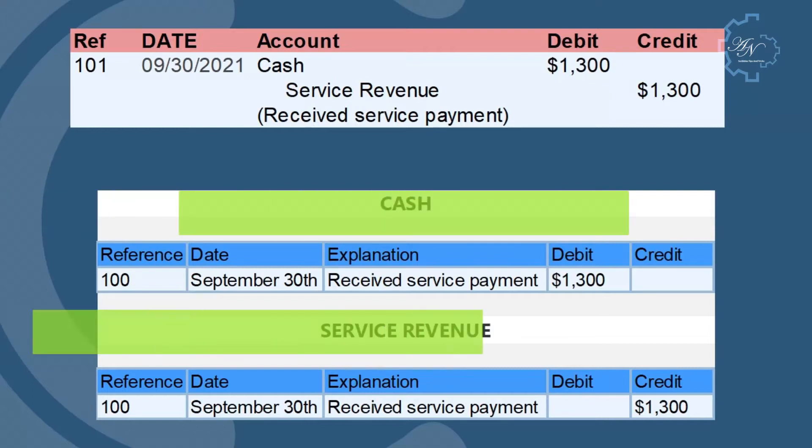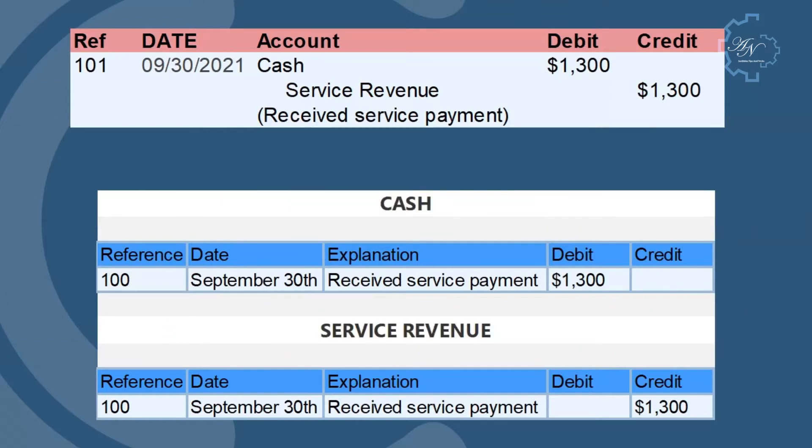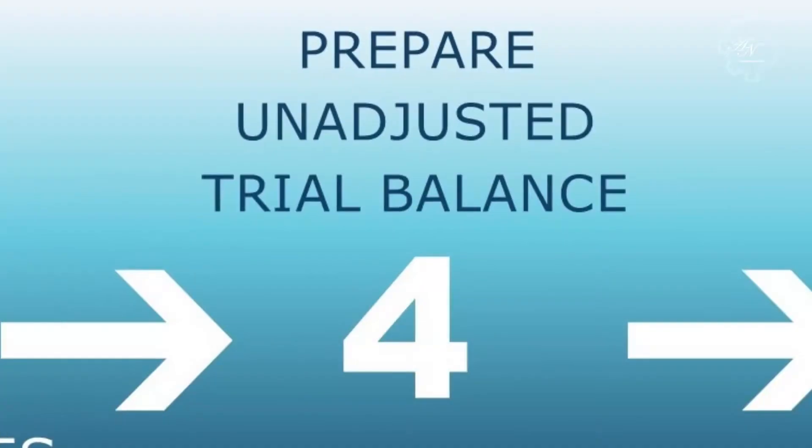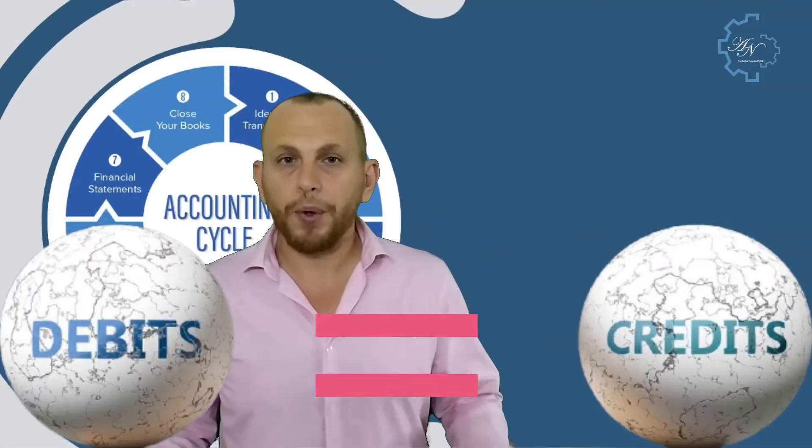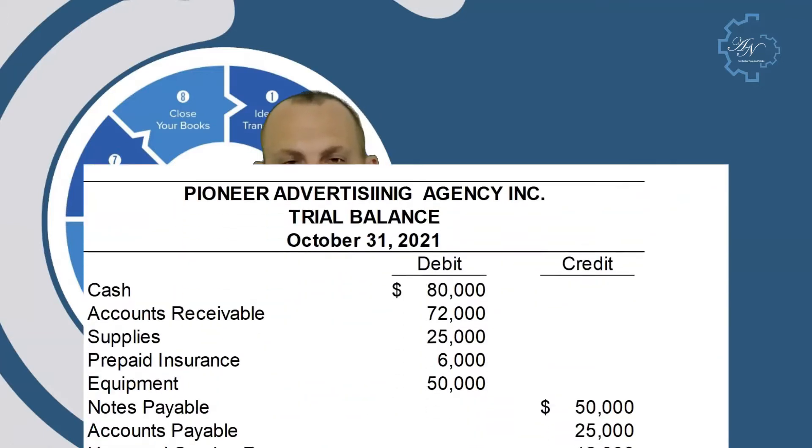Cash is debited and revenue is credited for $1,300. Step number four: unadjusted trial balance. To double-check whether debits equal credits, we use what is called the unadjusted trial balance. It's a list of all accounts from the ledger with their balances. This process is usually done at the end of the accounting period. The purpose of the unadjusted trial balance is to check for possible errors, but it doesn't guarantee that your finances are completely free of mistakes.